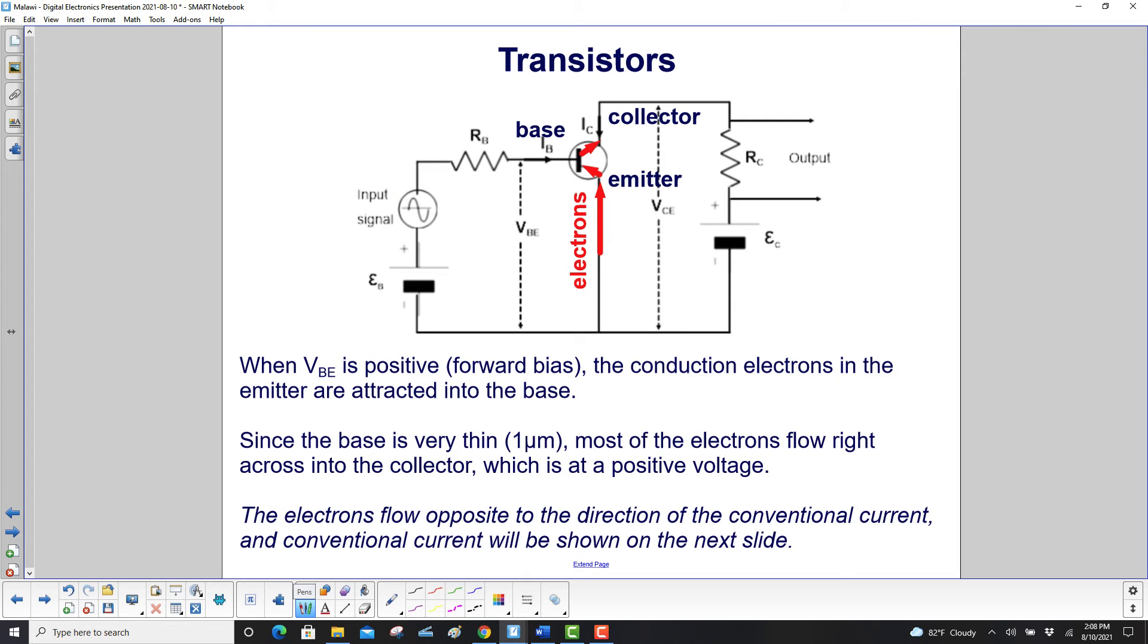When VBE is positive, which is forward bias, the conduction electrons in the emitter are attracted to the base. They flow from emitter to base and then through to the collector. Notice how electrons flow opposite to conventional current. Since the base is very thin, about one micrometer, most electrons flow right across into the collector, which is at a positive voltage. The current flows like this and can be picked off here for other purposes. Electrons flow opposite to the direction of conventional current.